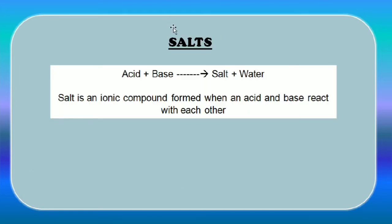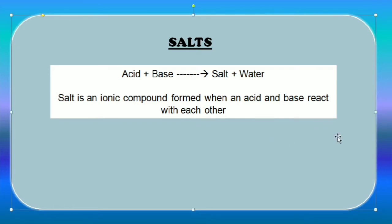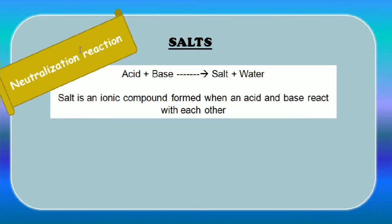When acids and bases react with each other — the acid giving H+ ions and the base giving OH- ions — they reform a compound called salt along with water. Salt is an ionic compound formed when an acid and a base react. During this process, water is also produced and heat is liberated. This reaction is called neutralization, because the acid having a low pH and the base having a pH greater than 7 combine to make the pH become neutral.